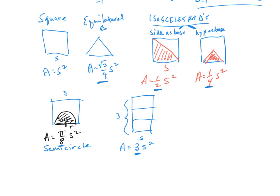Some problems you might need to interpret and set up area for a particular situation. Using constant multiples relates back to the square every time. For an isosceles right triangle with the side of the base as the base, the area is one-half as much as the square. If the hypotenuse is used as the base, the multiplier becomes one-fourth, because our shape is one-fourth of that square.